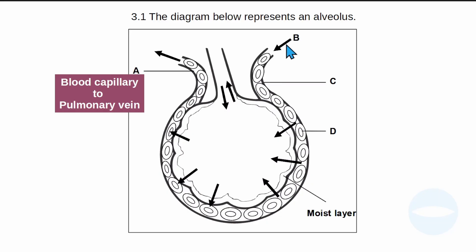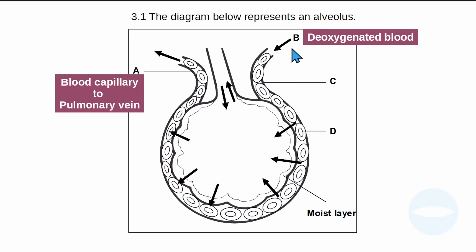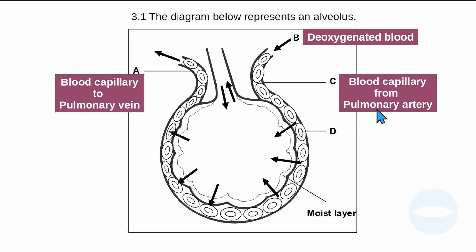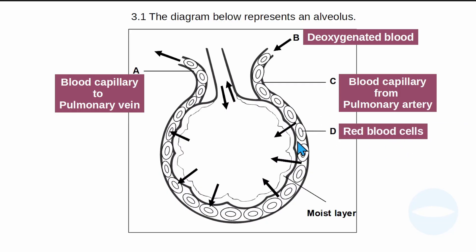Label B: the arrow shows blood entering here — this is deoxygenated blood, which has a higher concentration of carbon dioxide. Label C is a blood capillary from the pulmonary artery, which takes blood from the pulmonary artery to the surface of the alveolus where gaseous exchange occurs. Label D is the red blood cells, which transport gases and all the nutrients that are needed.